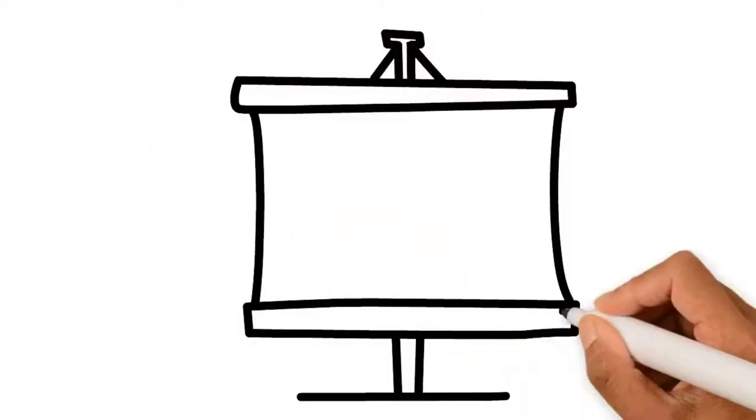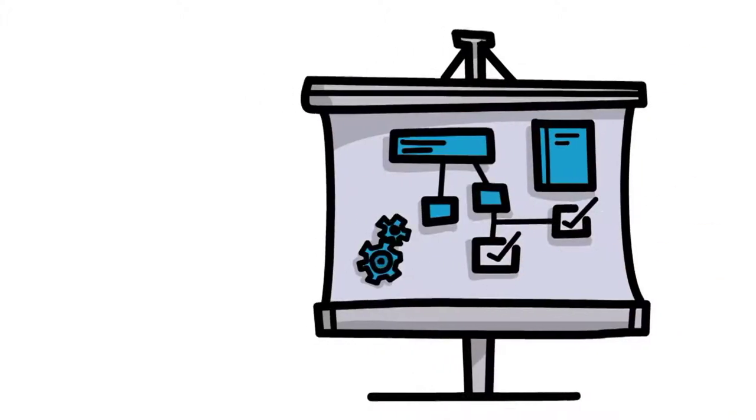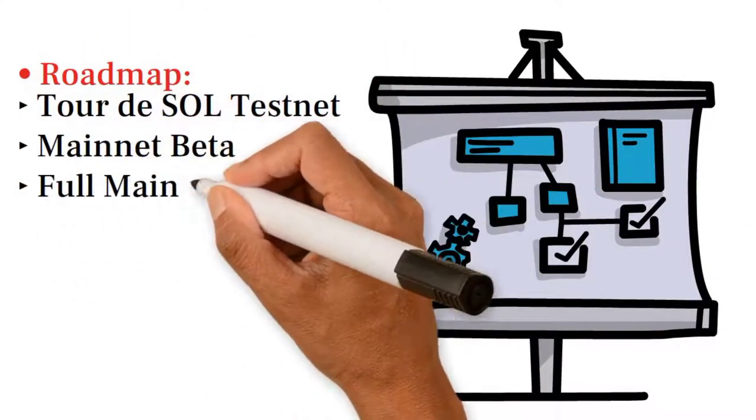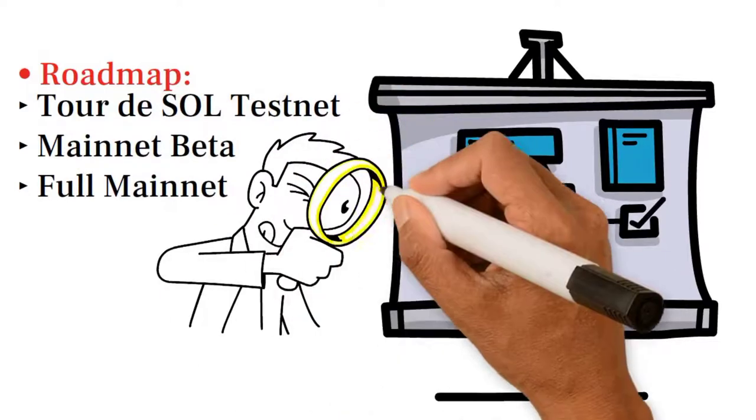Let's talk about Solana's roadmap. Its roadmap includes three phases. Tour de Seoul Testnet, Mainnet Beta and Full Mainnet. Let's briefly look into all of these.